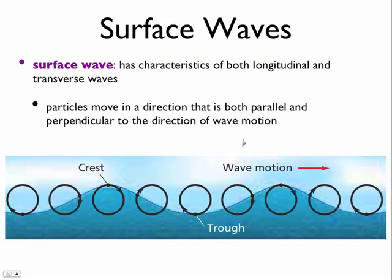Surface waves have the characteristic of both longitudinal and transverse waves. The reason is they do go up and down, which is very transverse. This is a very transverse look.